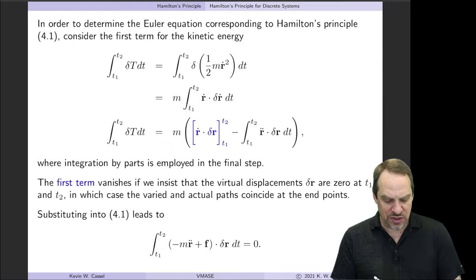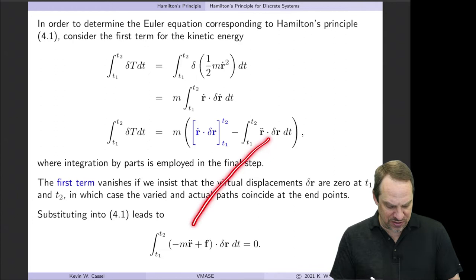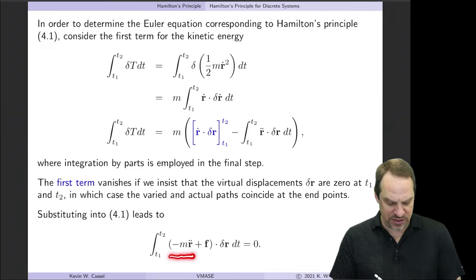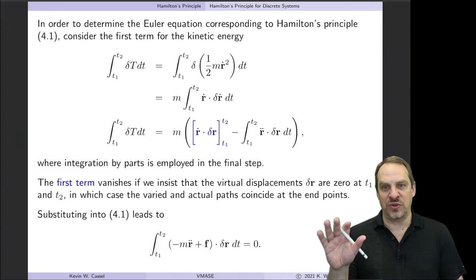We're going to say that the position R is known at the beginning and end times — just like in Chapter 2, where U and û were the same at both ends of the domain — so this boundary term vanishes. We're left with −M R̈·δR. Putting that back in for δT, we have (−M R̈ + F)·δR, the force vector, all dotted with δR.